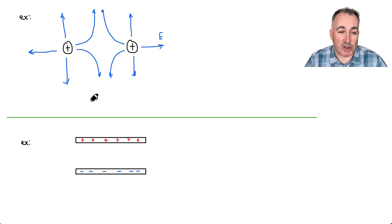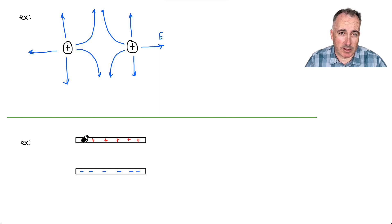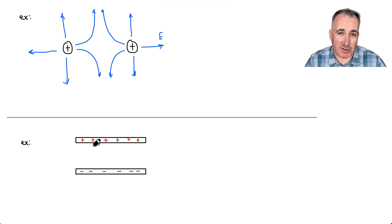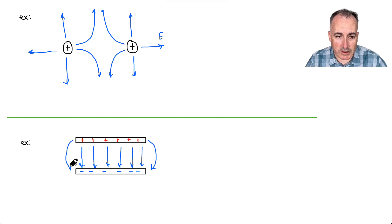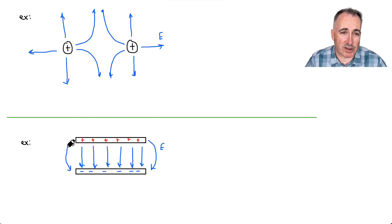What about two parallel plates where the top one is positive and the bottom one is negative? If I place my positive test charge right here — remember, it's always a positive test charge — it doesn't want to go towards the positive. It wants to go down. So I'm going to be drawing these lines going down. But it's not just that they go down — at the edge, they're actually going to curve. If you're asked to draw these, you need to draw these edge effects where they start to curve. Always draw these edge effects.